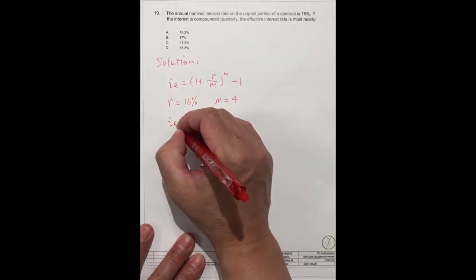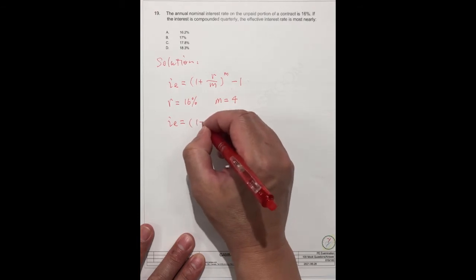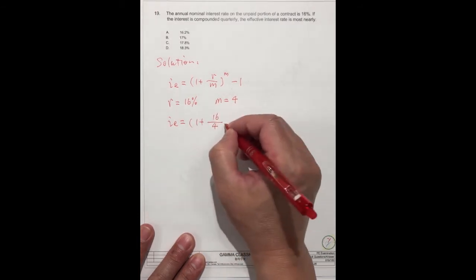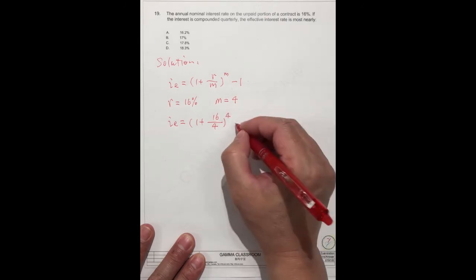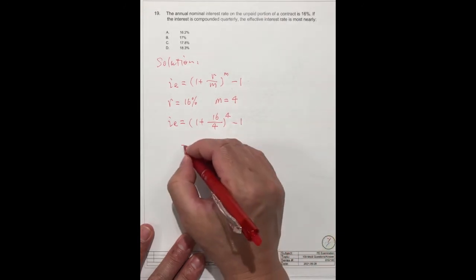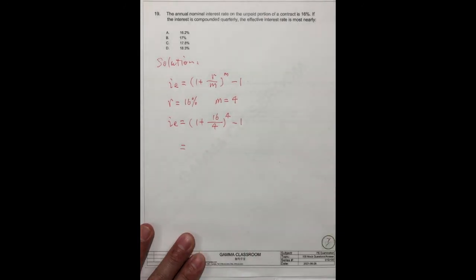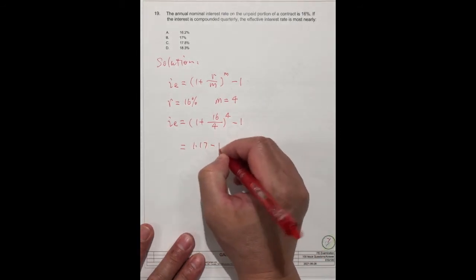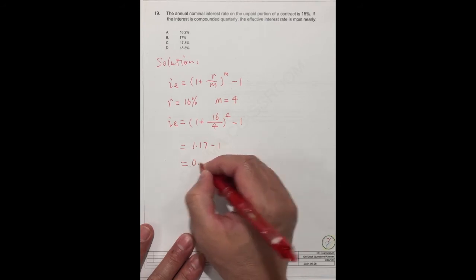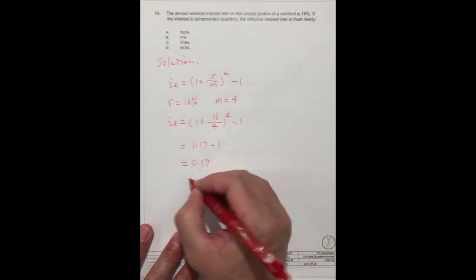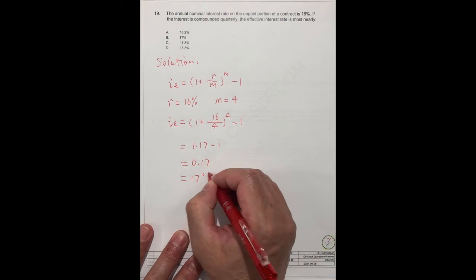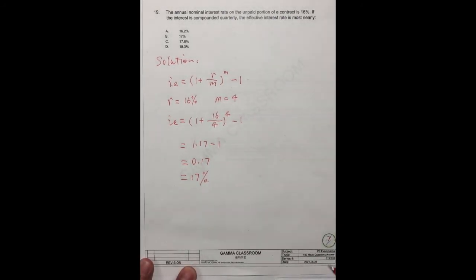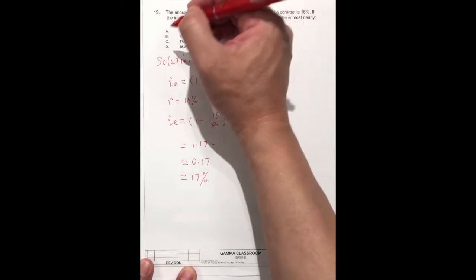So IE equals 1 plus 16% divided by 4, to the power of 4, minus 1. The number should be 1.17 minus 1, which equals 17%. So the correct answer should be B.